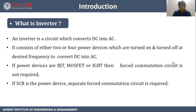First of all, what is an inverter? An inverter is a circuit which converts DC into AC. It consists of either 2 or 4 power devices which are turned on and turned off at a desired frequency to convert DC into AC. If the power devices are BJT, MOSFET, or IGBT, then a force commutation circuit is not required. If SCR is the power device, a separate force commutation circuit is required.